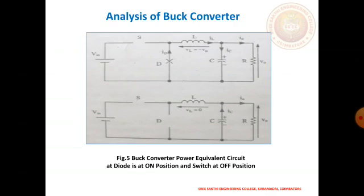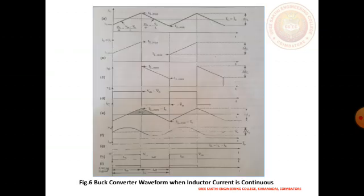As the transistor continuously switches between closed and open, the average output voltage is related to the duty cycle. An advantage of the buck converter is that the inductor-capacitor arrangement provides good filtering of the inductor current. This is the basic idea of the buck converter, along with corresponding waveforms showing the inductor current in continuous mode of operation.